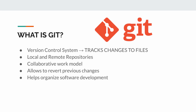Git is essentially version control. So what does version control do? Version control tracks all and every change made to your files. You can start to see how this is very important.